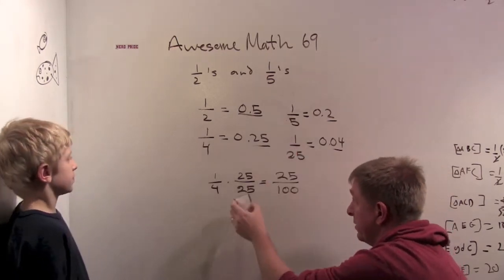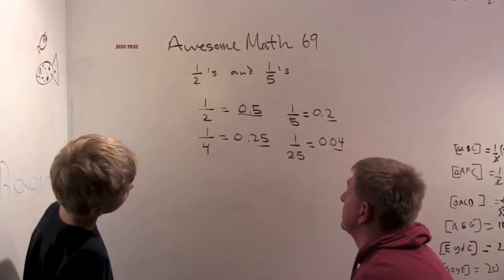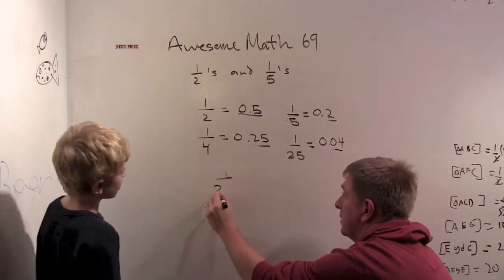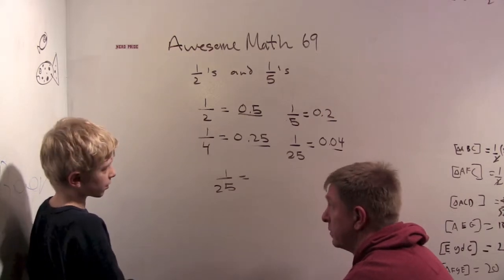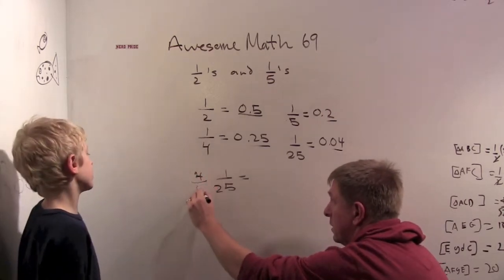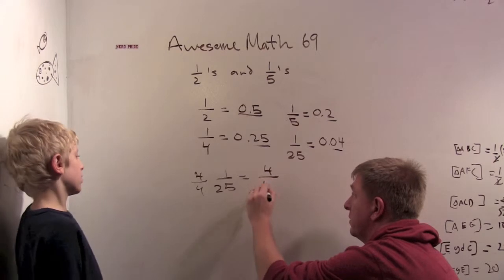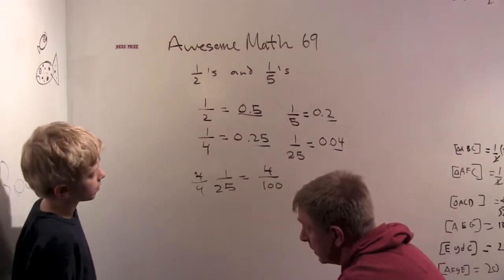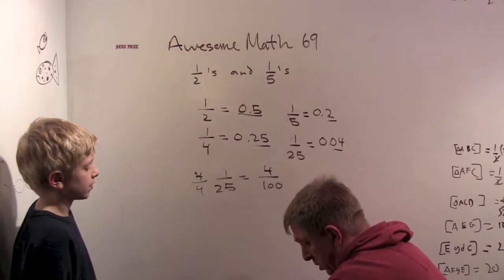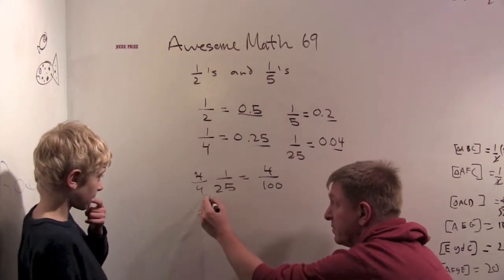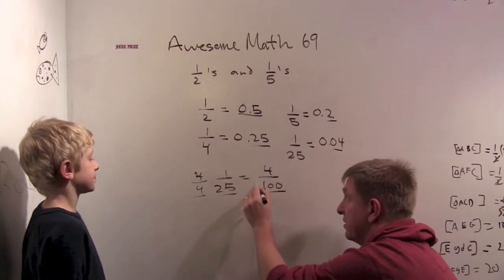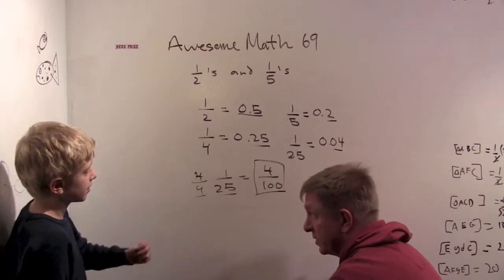What do I have to multiply by here for one twenty-fifth? Well, one twenty-fifth, you can multiply by four over four to get two of power, four over one hundred. So we like having equal amounts of twos and fives on the bottom. Two twos, two fives, because it's a very nice, easy decimal.